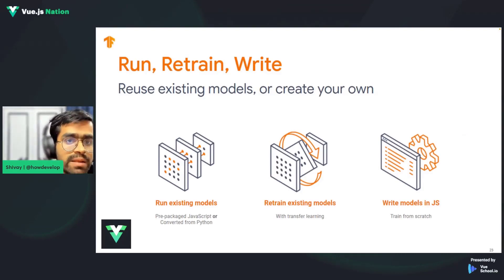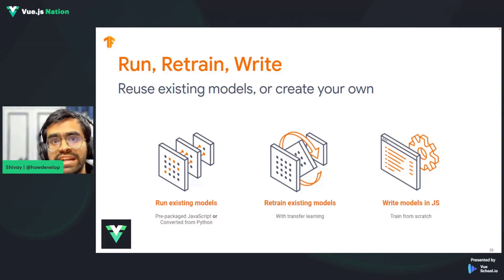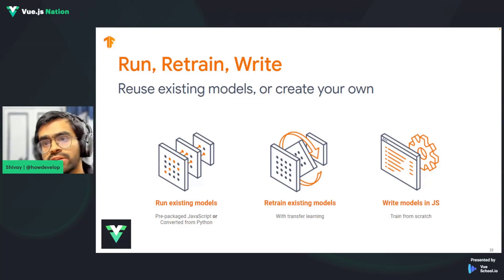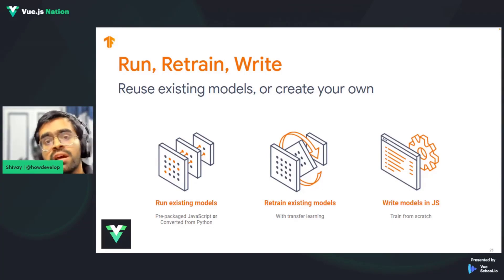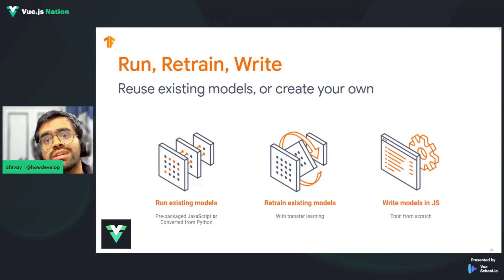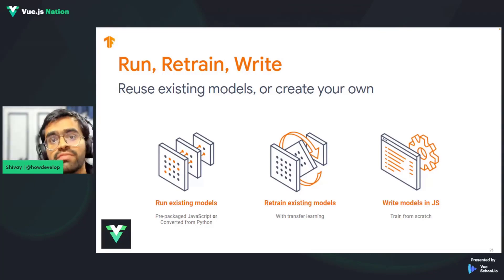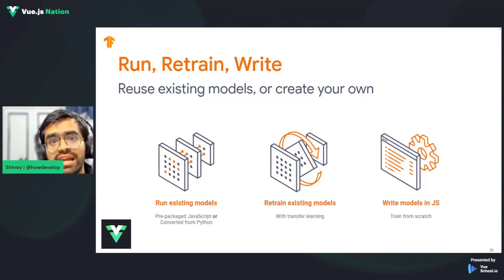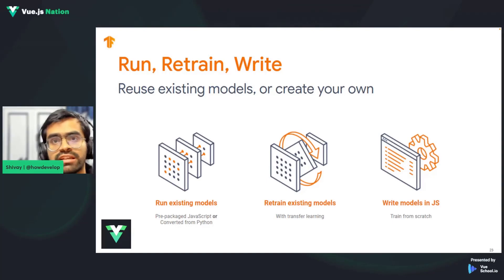The TensorFlow.js library allows you to primarily do this in three different ways. The first is by running existing pre-trained models that you can directly integrate inside your application — using functions like dot-predict to get machine learning predictions. The second is retraining models with transfer learning, where you retrain pre-existing models on your own dataset. Finally, you can directly write machine learning models in JavaScript using the ops and layers API — low-level APIs that let you write custom machine learning code directly in JavaScript.